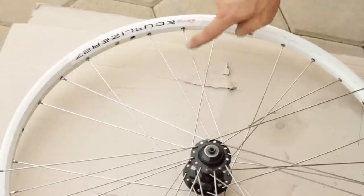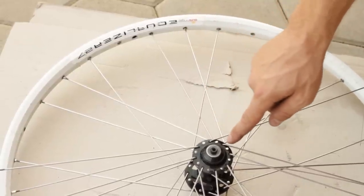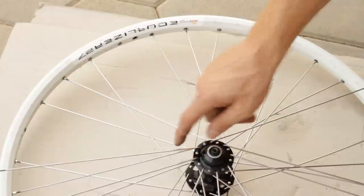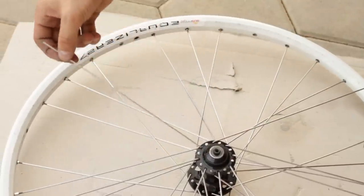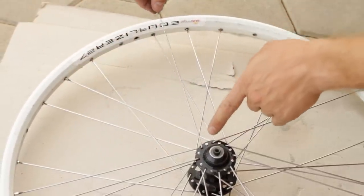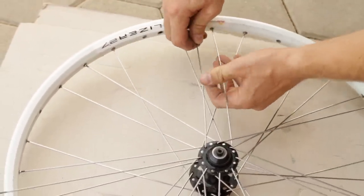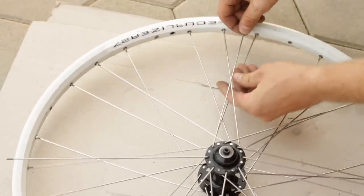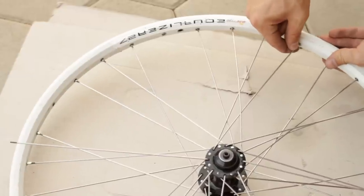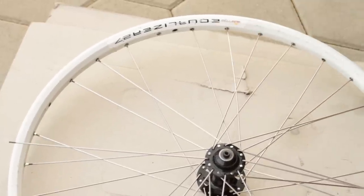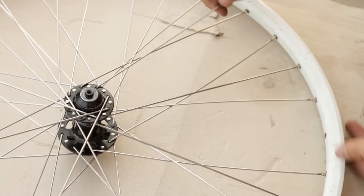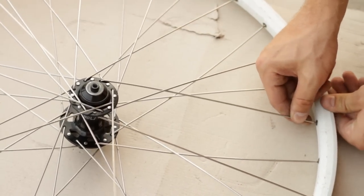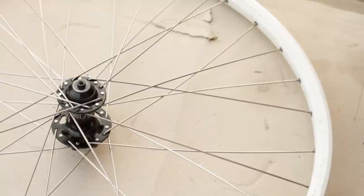Pick any spoke on the top hub flange that is already laced to the rim. Now find the spoke five hub holes away in a counterclockwise direction. Take that spoke, cross it over two spokes and under the spoke you counted from. Stick the spoke into the rim hole two holes clockwise from the spoke it crosses under. Thread the nipple onto the spoke three turns. Continue around the wheel doing the same thing until the wheel is laced.